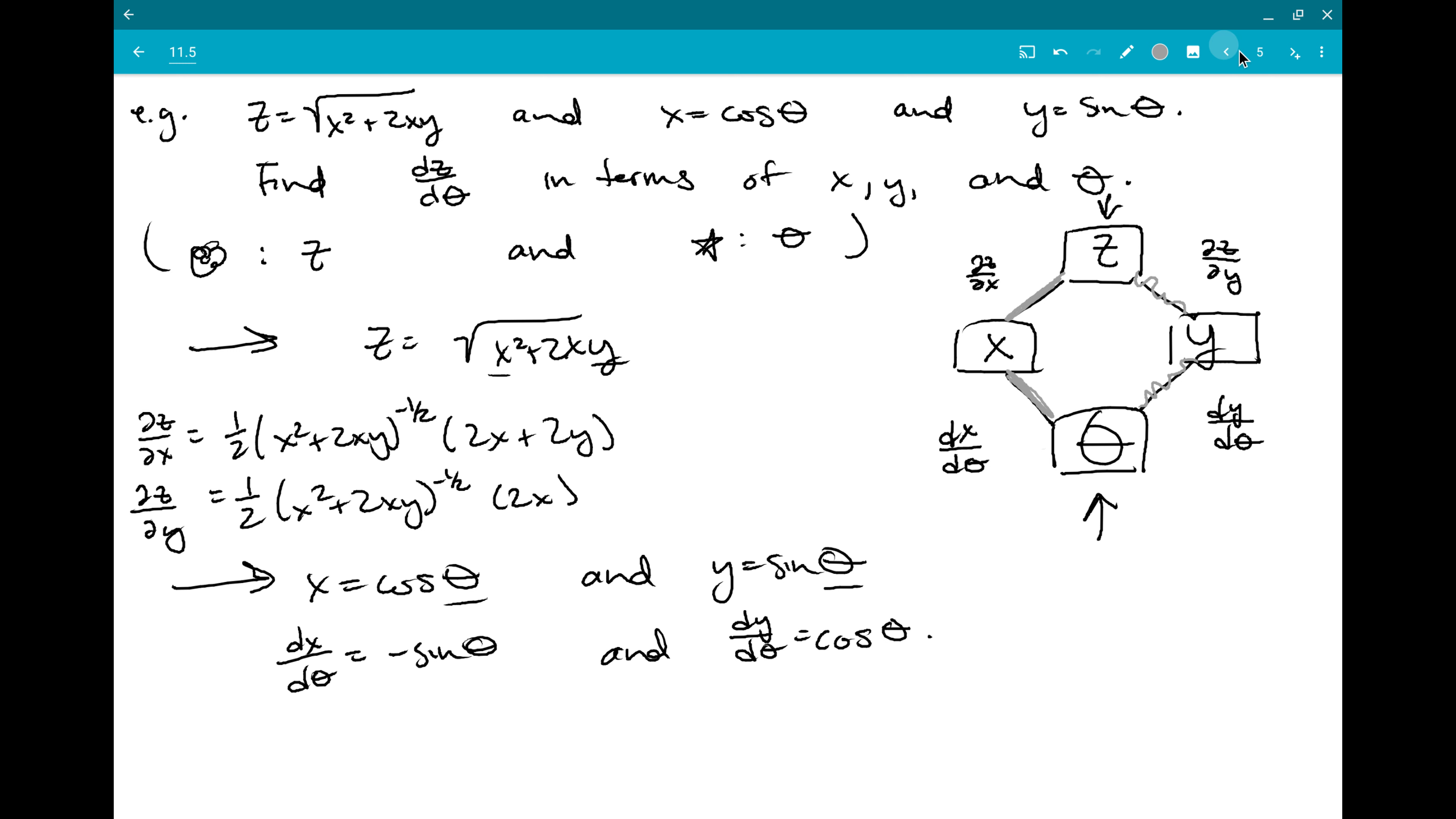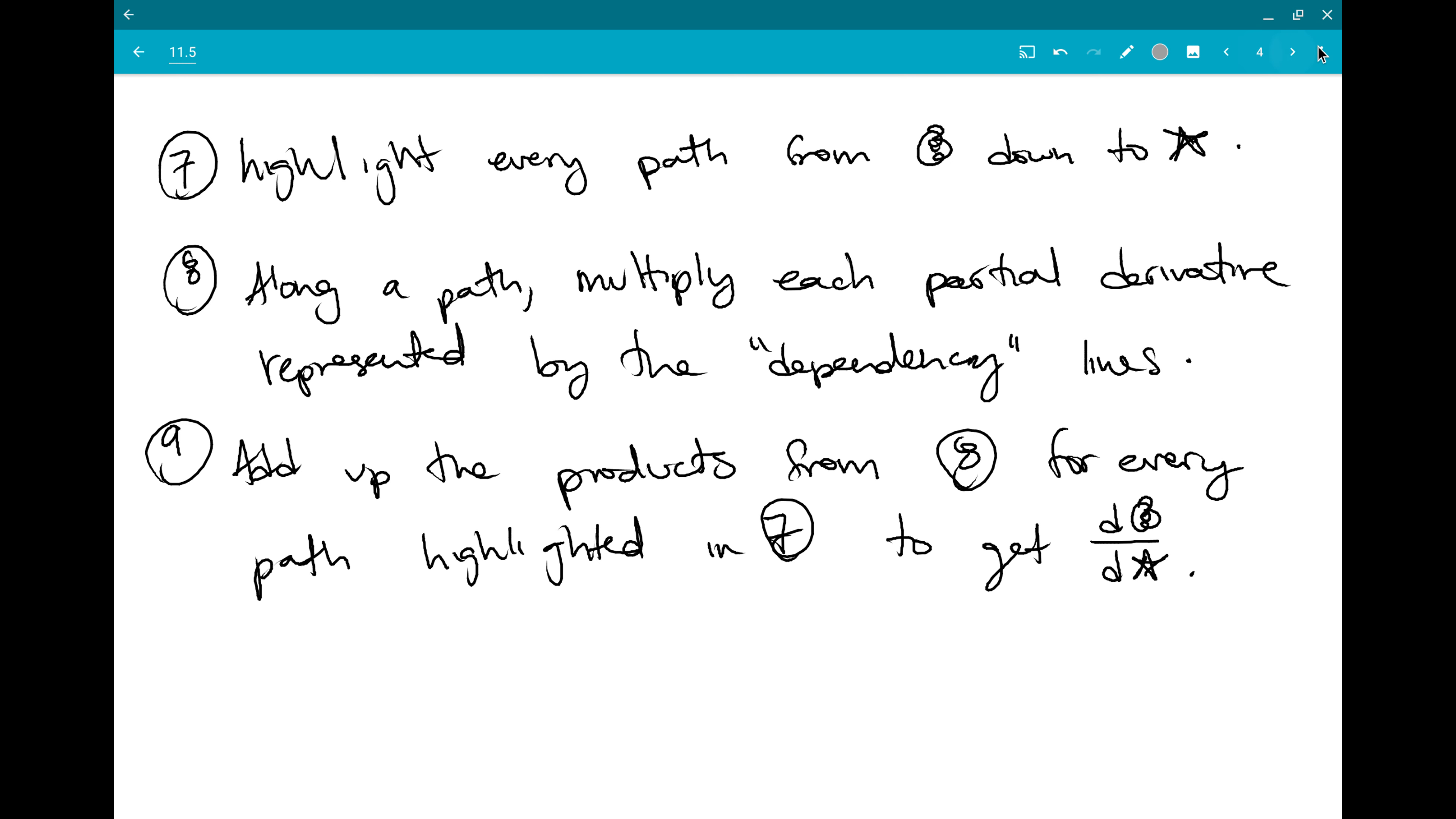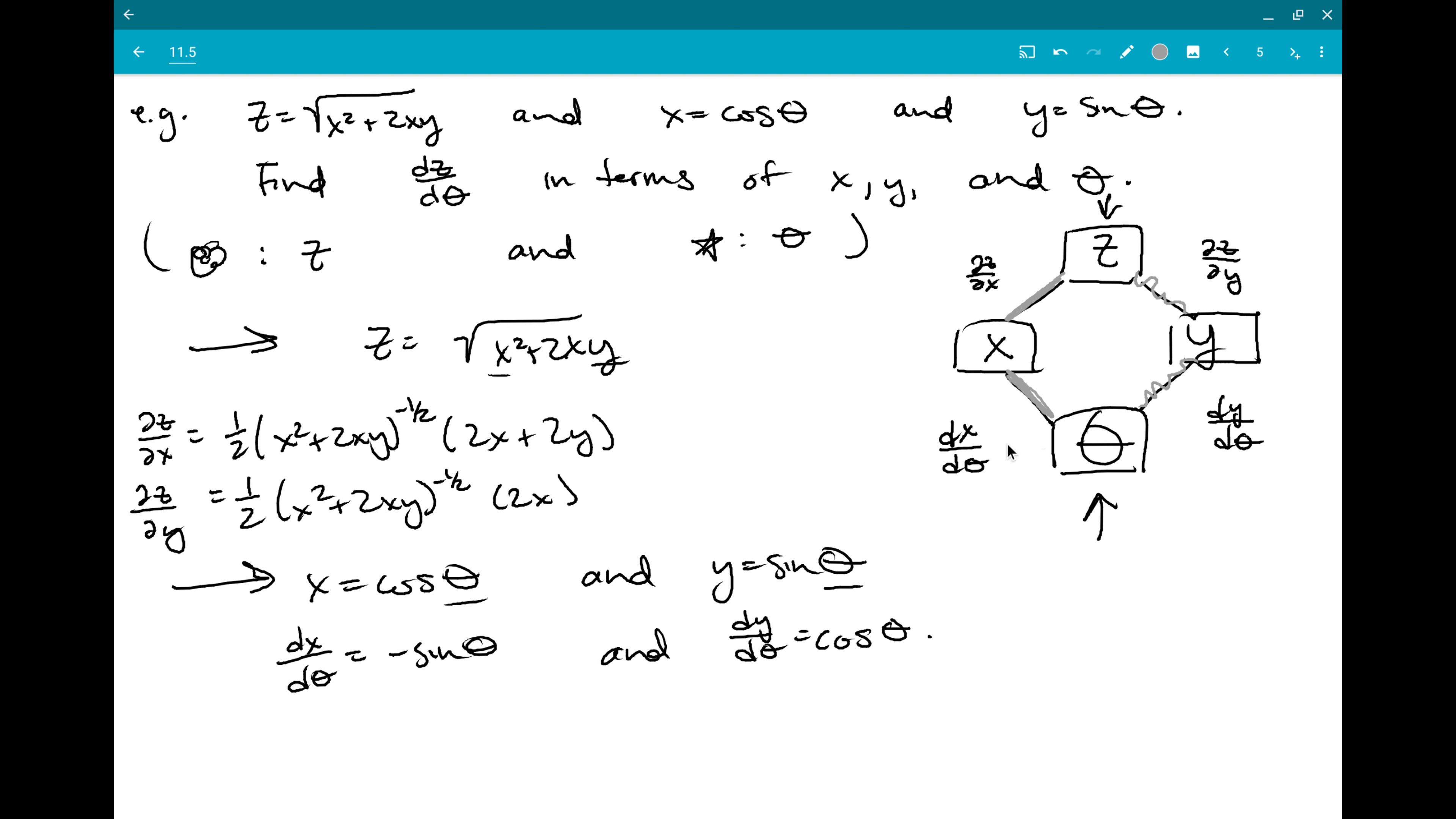And so this one, if I go down the path, I'm supposed to take the products of every partial derivative that's represented along those lines. So I'm going to get along that darker line I tried to draw. I'm going to have dz dx times dx d theta. I take this amount. I'll just try to do something. And multiply it by that amount.